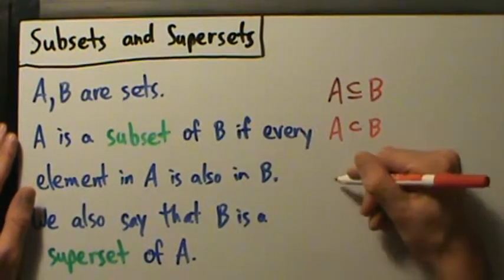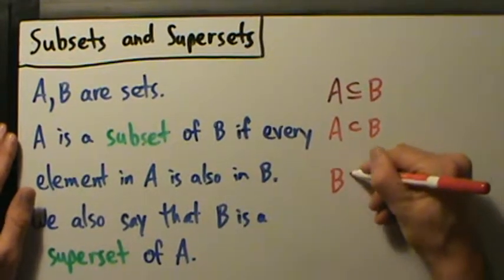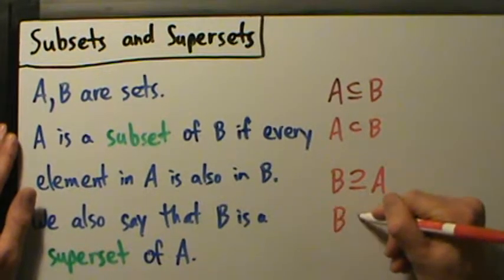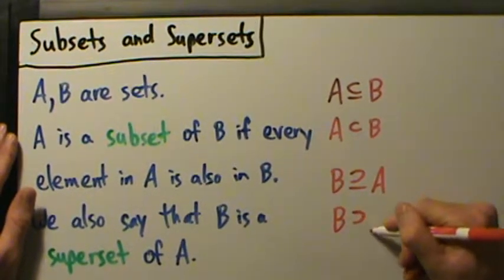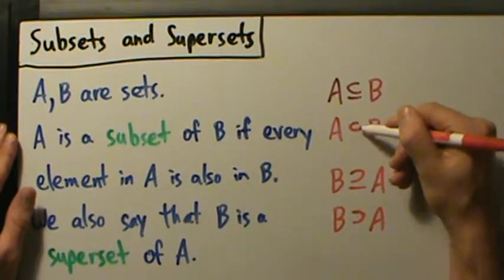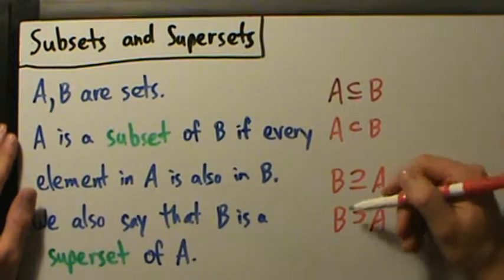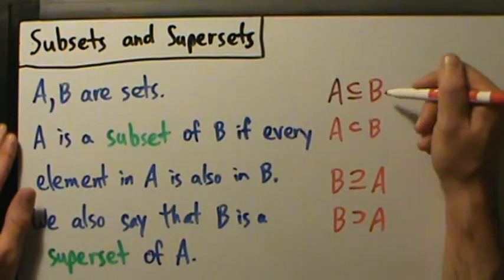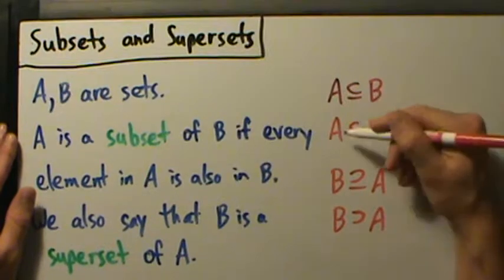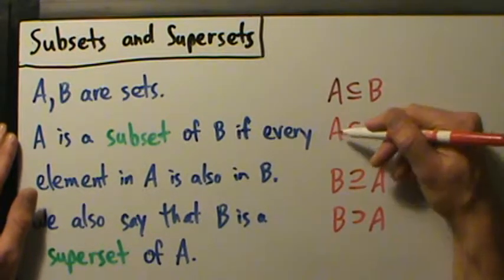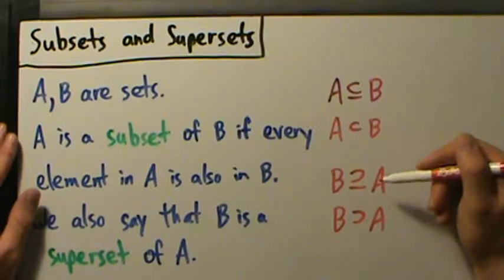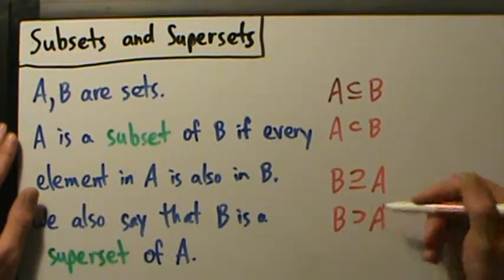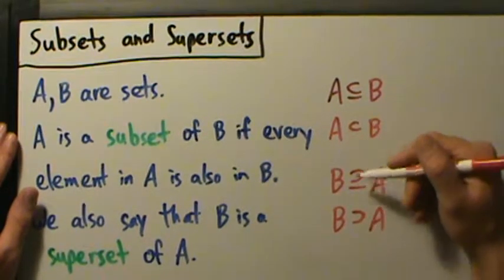That's one way of writing it. We could also write B with the superset notation followed by A, or again without the line. This subset notation is much more common than the superset notation, but the superset form is a possibility. You can also read these backwards — A is a subset of B, or B is a superset of A.